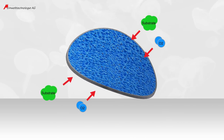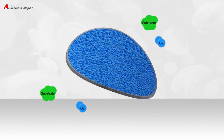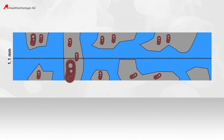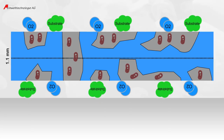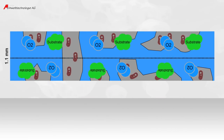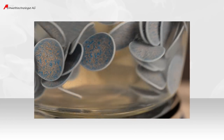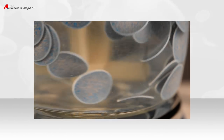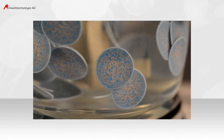Since the Mutag Biochip is a disc with a total thickness of approximately 1.1 mm, oxygen and substrates can sufficiently diffuse from both sides of the disc. The active biomass in the pores is permanently superseding any dead biomass due to its growth. Thereby, the biomass in the pores remains constant.